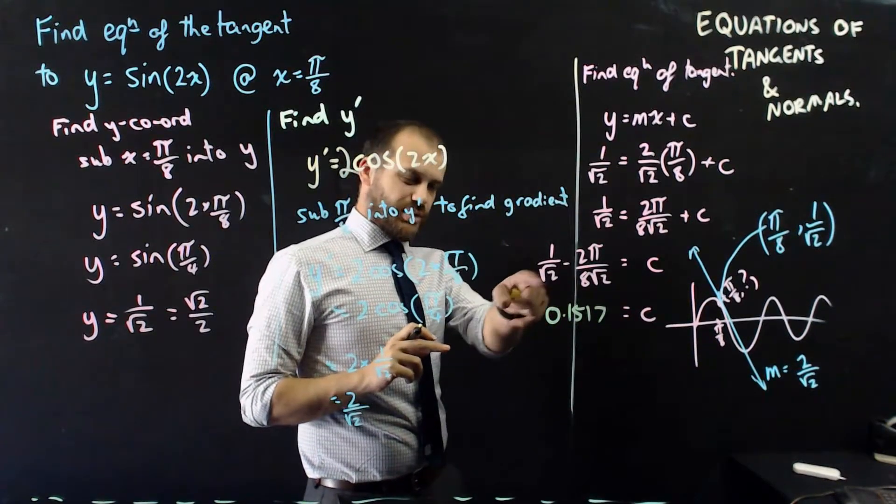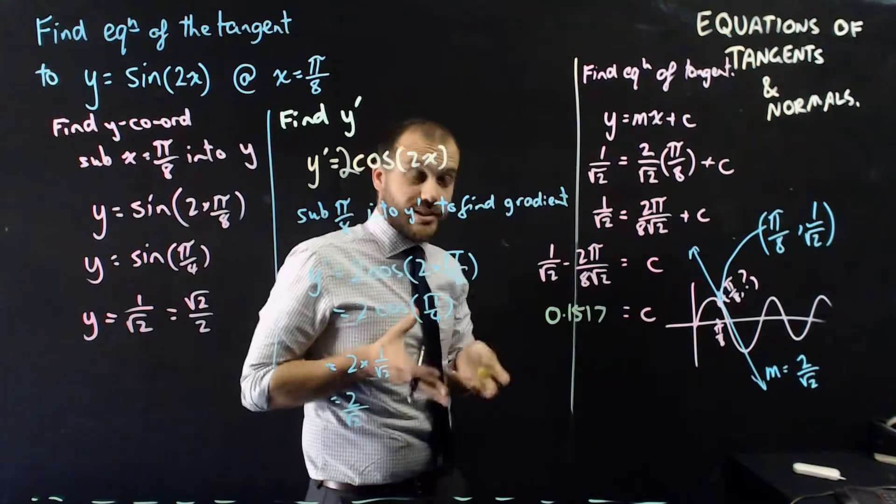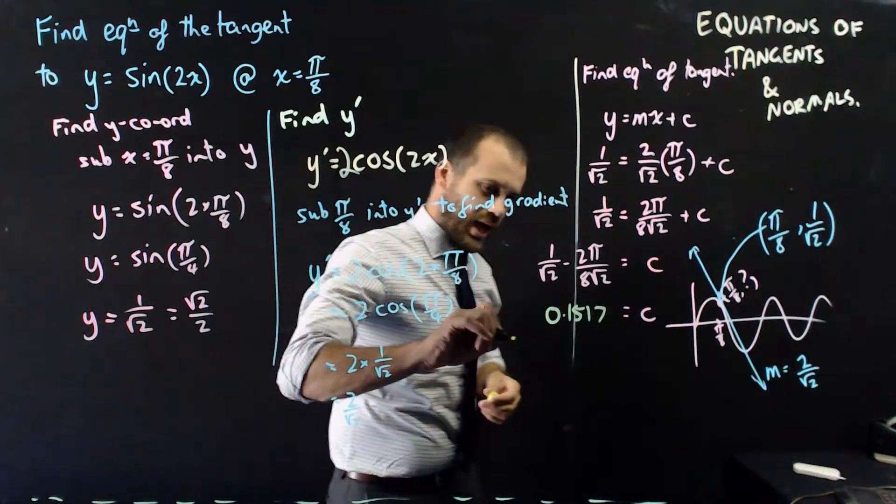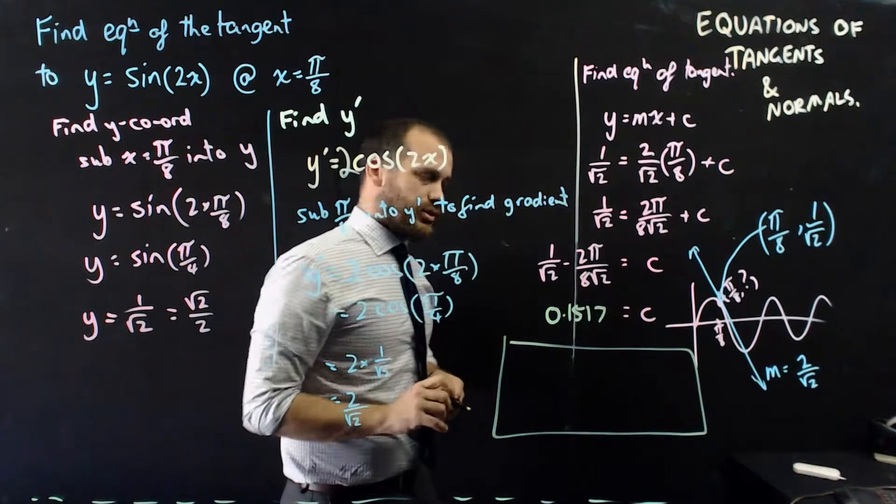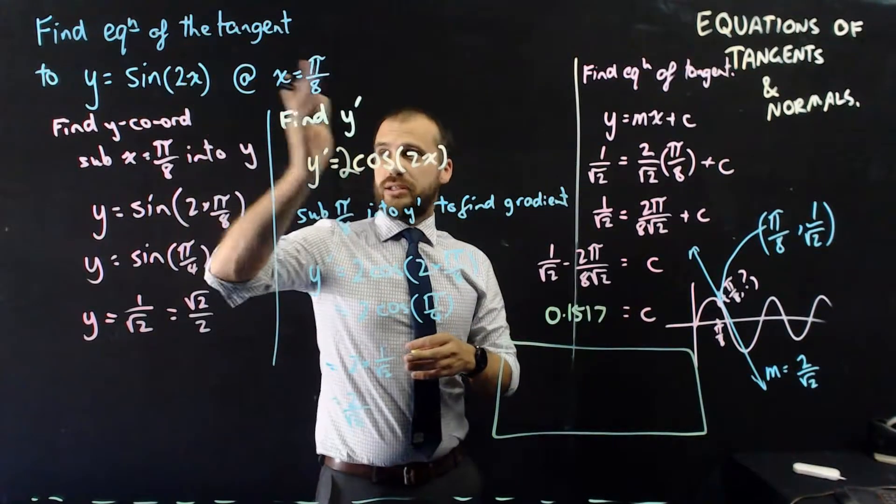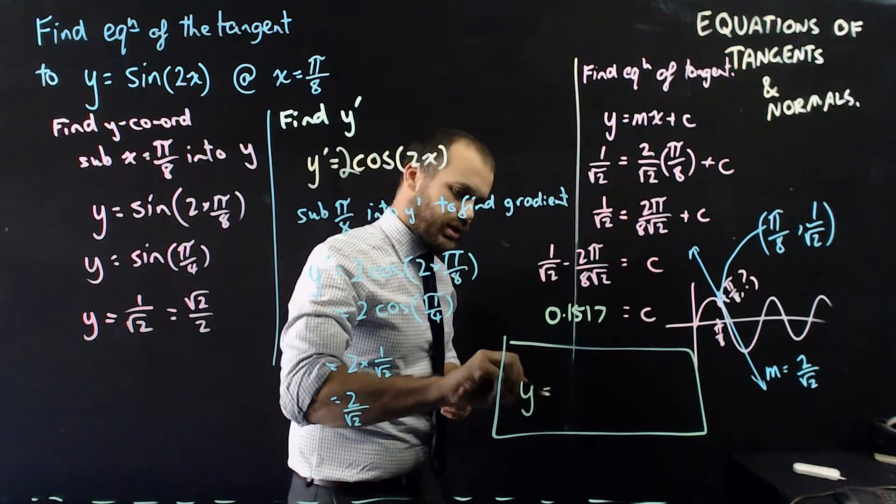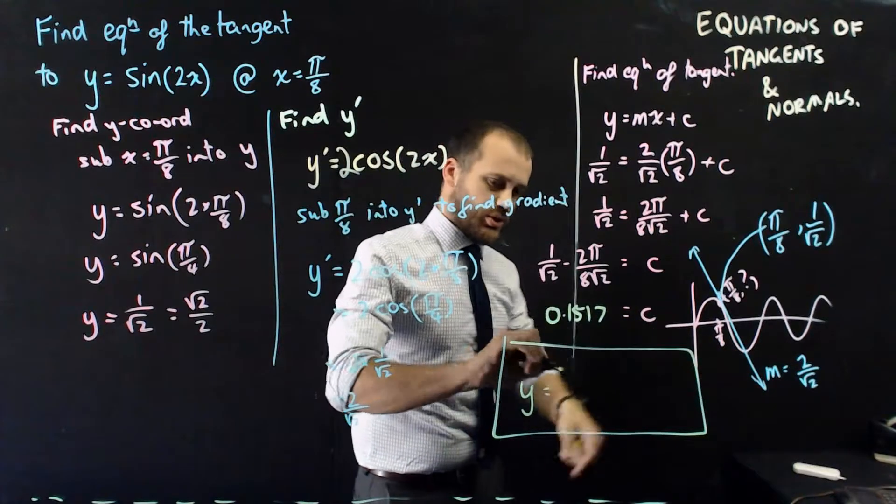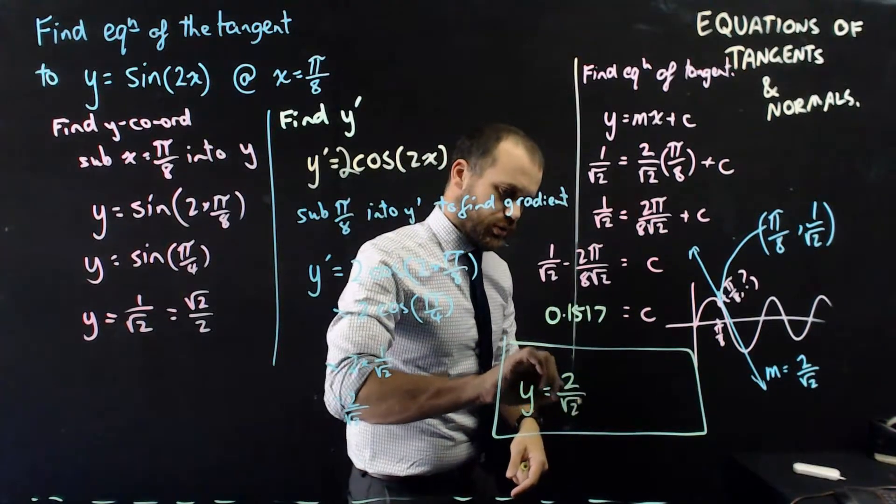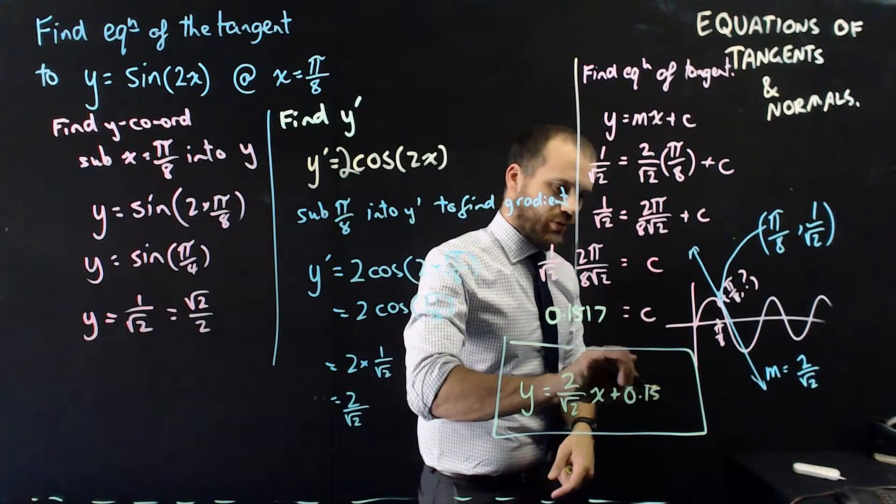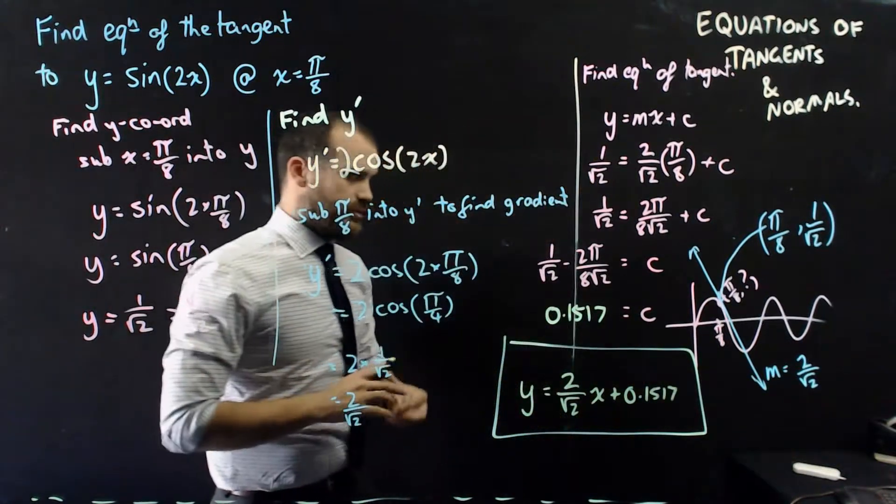You could have subtracted those fractions together and got an exact answer. But that's my decimal approximation. I am now at the end of this question. I am finding the tangent of that function at x equals π on 8. My answer is y equals the gradient which is 2 on root 2 times x plus 0.1517.